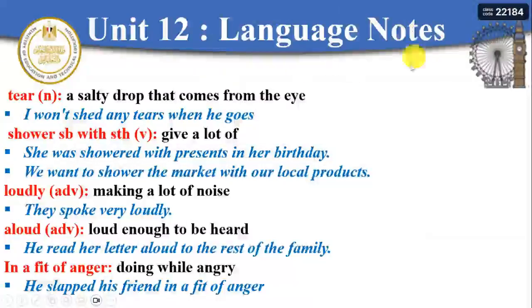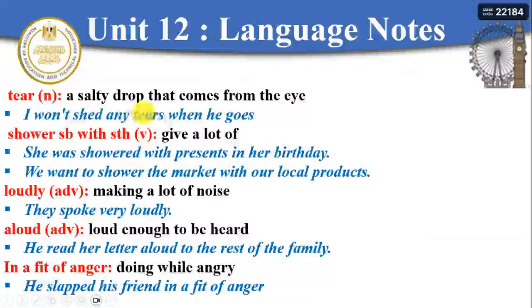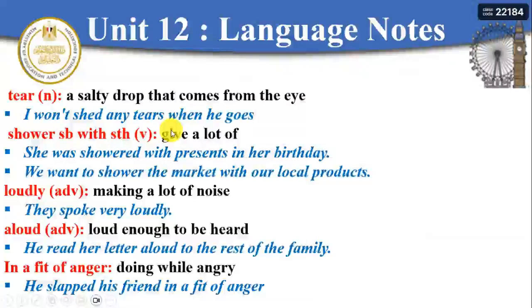Now in the language notes. The word 'tear' as a noun means a salty drop that comes from your eyes when you cry — the drop of water from your eyes when you cry. For example: 'I won't shed any tears when he goes' — I am not going to cry over him.